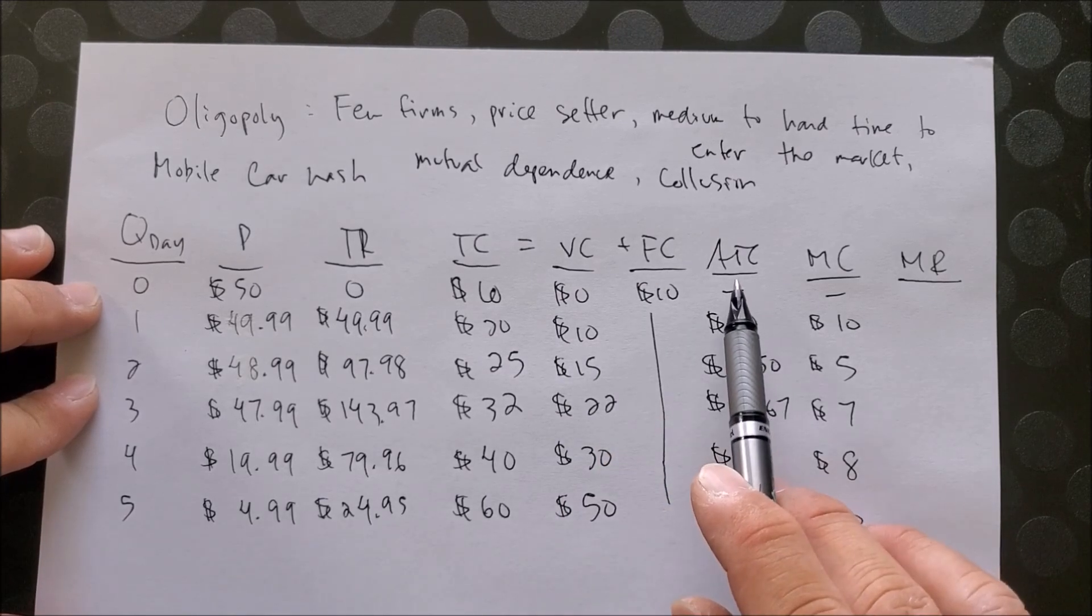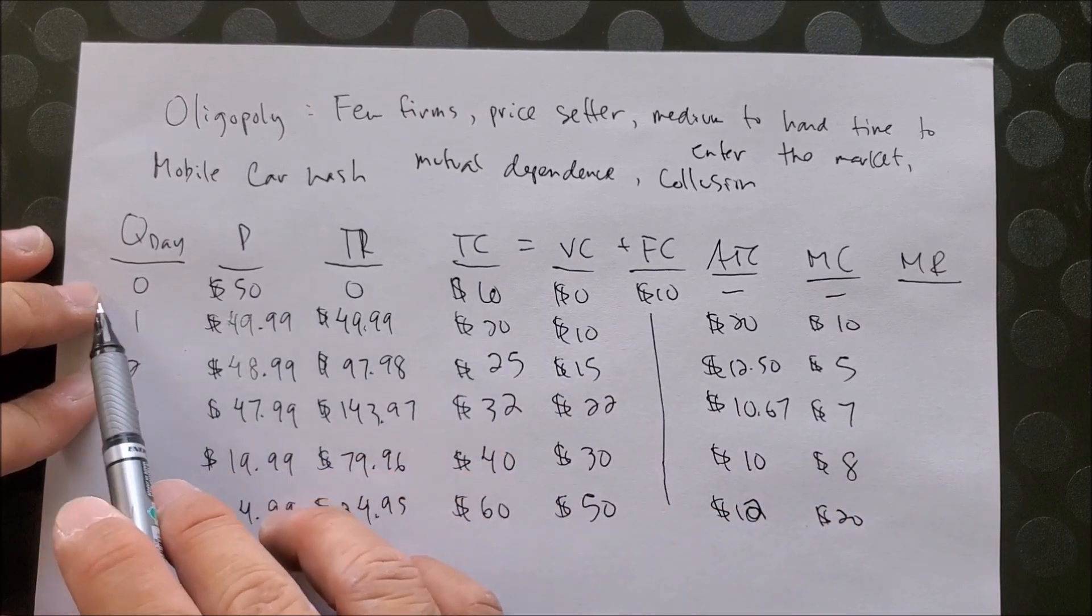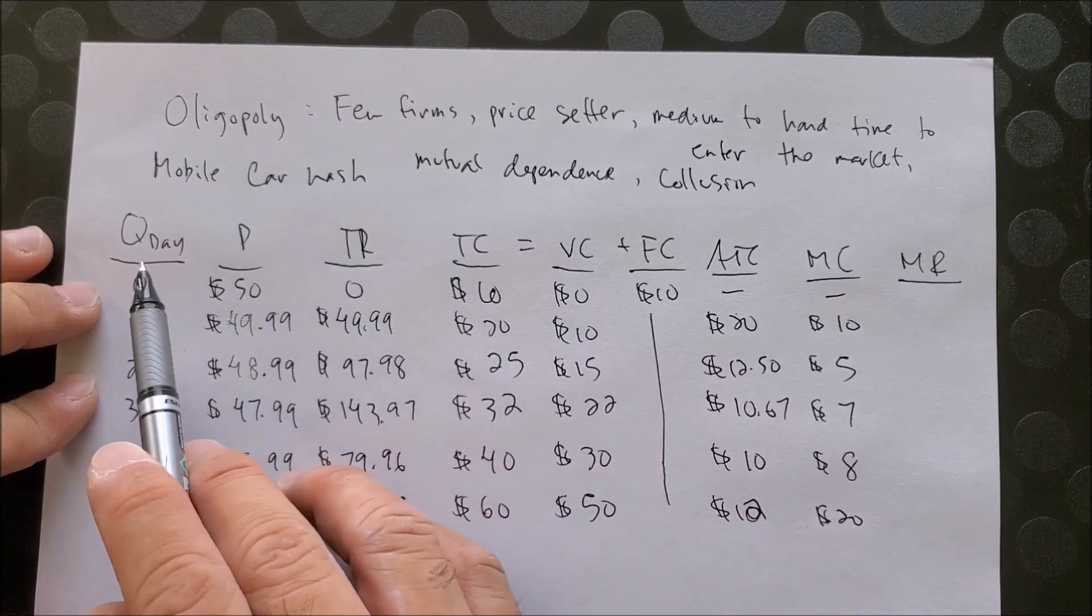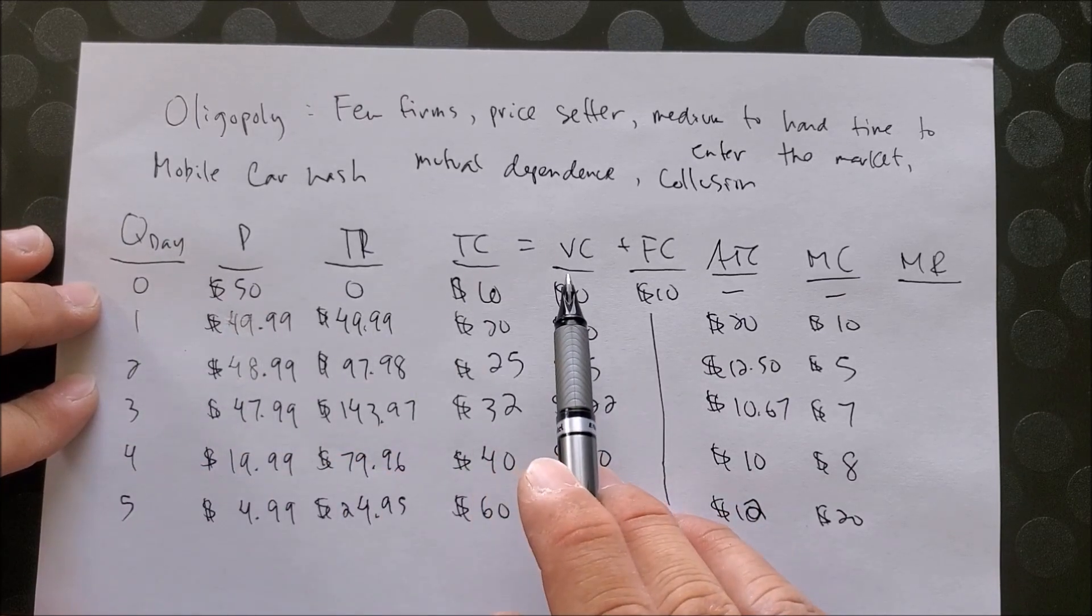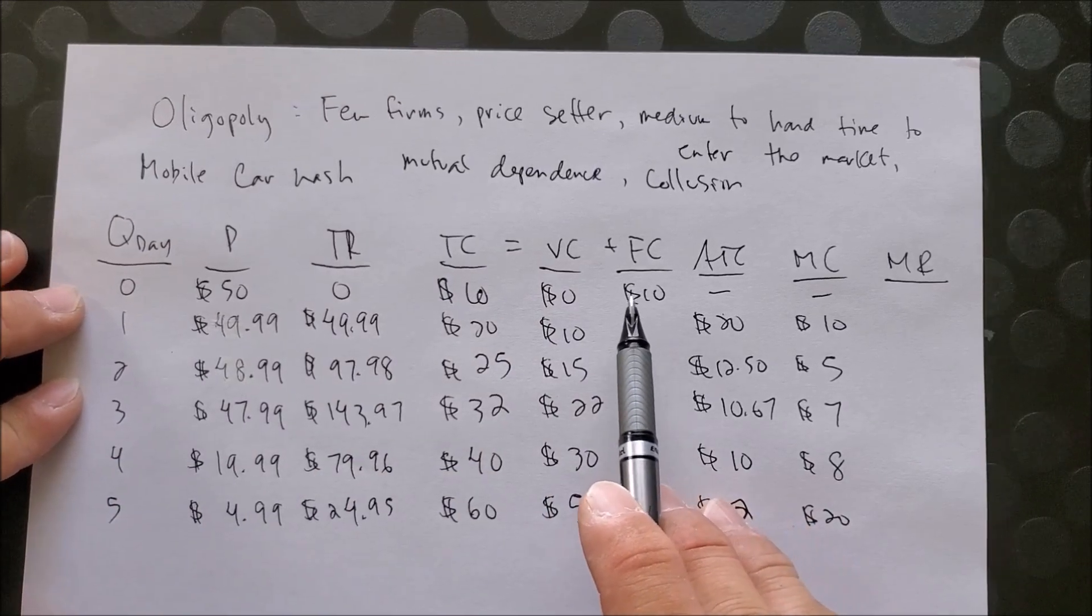We could also find ATC, AVC, AFC by taking total cost over quantity for ATC, variable costs over quantity to get AVC, and fixed costs over quantity to get AFC. Now I am going to exclude AVC and AFC because I just want to show you graphically what an oligopoly market looks like on a graph.